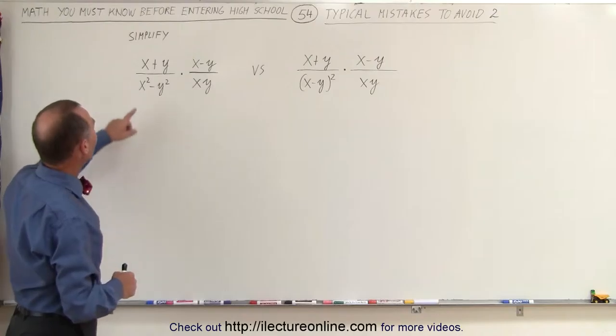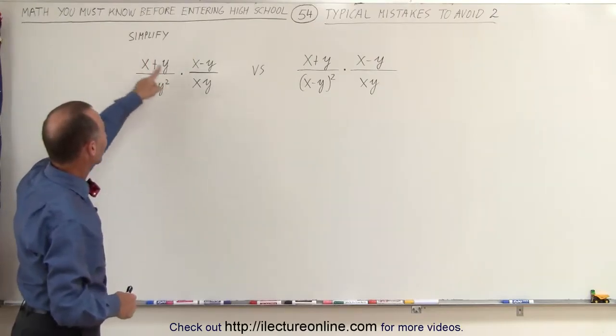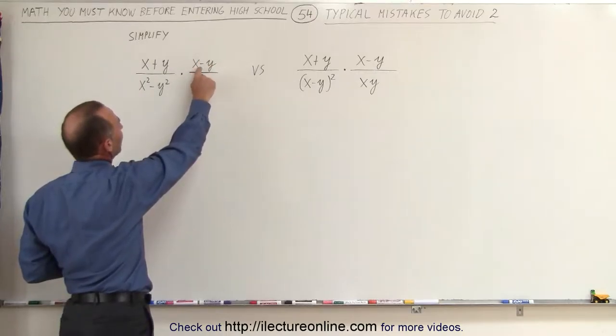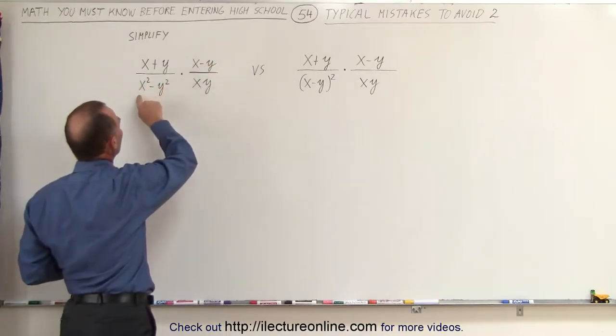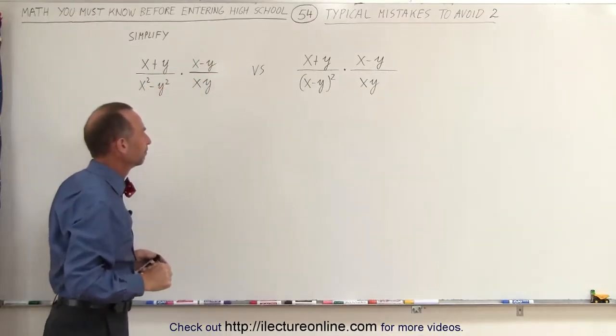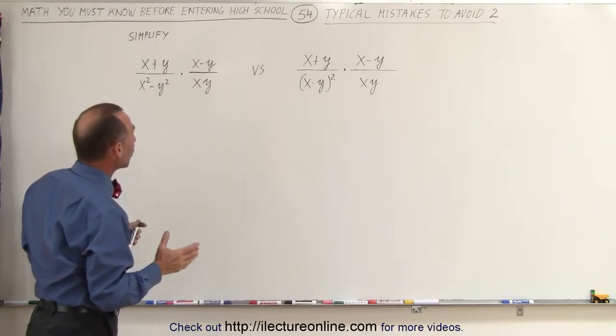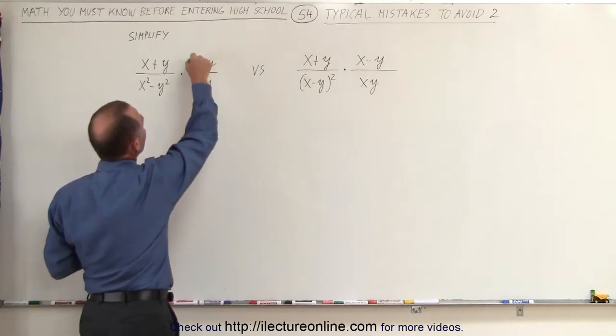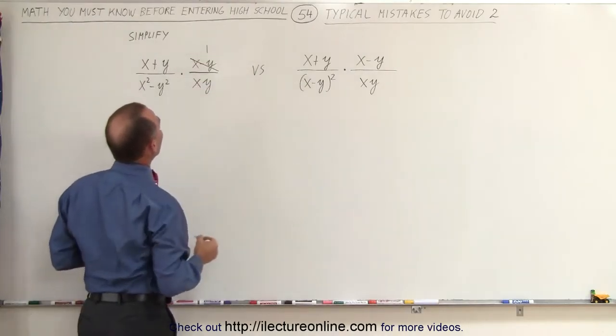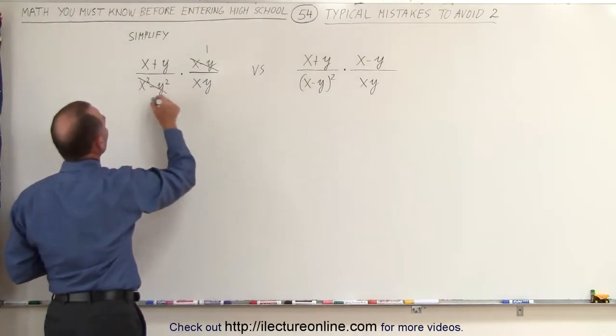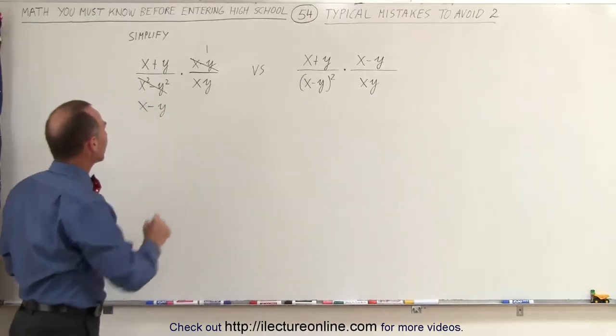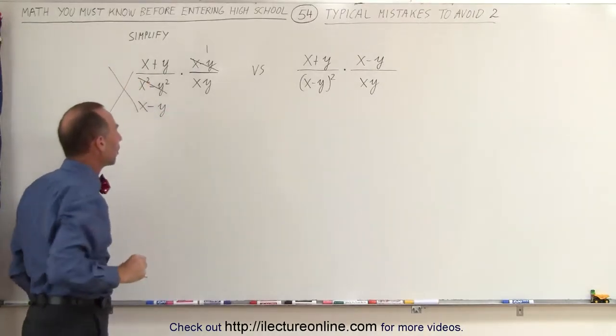For example, if we look at this rational expression, and we look at this rational expression, notice we have an x minus y, and we have an x squared minus y squared. Now you may think that we can simplify this and this. We can say that this can be x minus y divided by x minus y, which is 1, and this can be written as x minus y. But that would not be correct. We cannot do that. That is wrong.